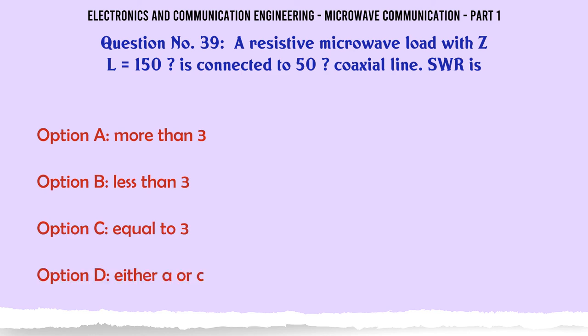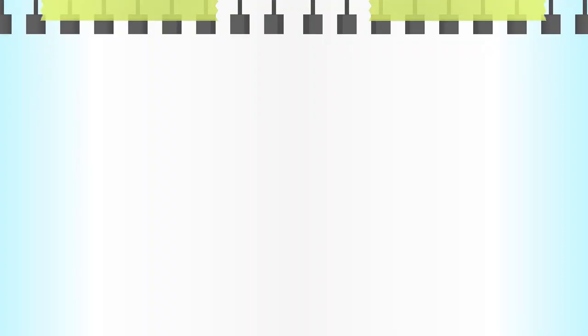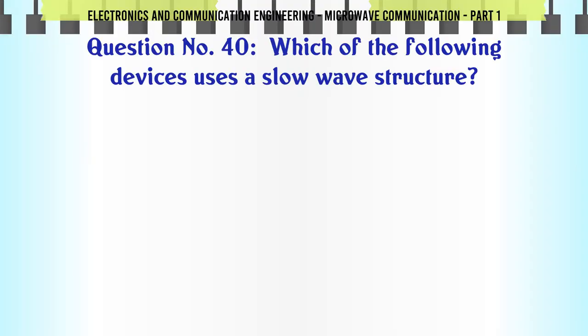A resistive microwave load with ZL = 150 is connected to 50 ohm coaxial line. SWR is: A. more than 3, B. less than 3, C. equal to 3, D. either A or C. The correct answer is equal to 3.